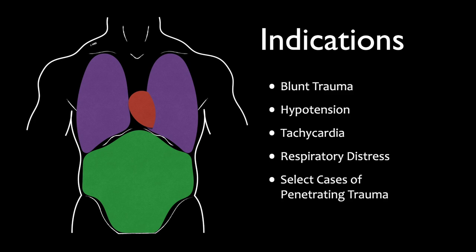You can use components of this exam to evaluate patients and help expedite care. It does have a role in penetrating trauma, particularly around the lungs and heart, when looking to see if there is either a pneumothorax or a large pericardial effusion causing decompensation. In blunt trauma, we're going to look at three areas of the body: the pericardial sac and heart, the lungs and thoracic cavity, and the abdominal cavity.